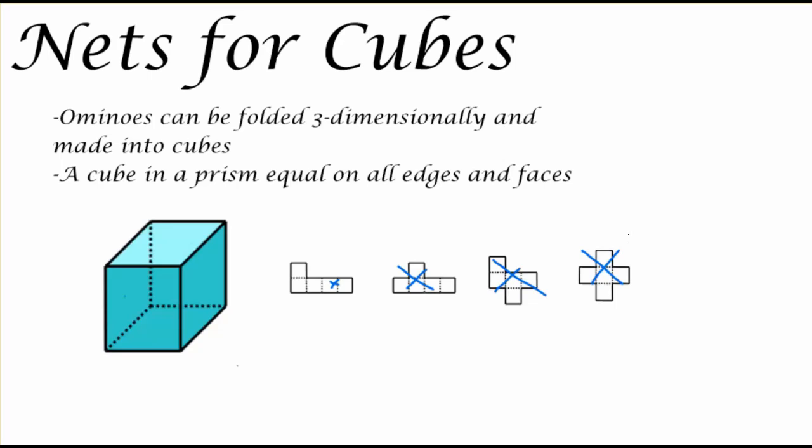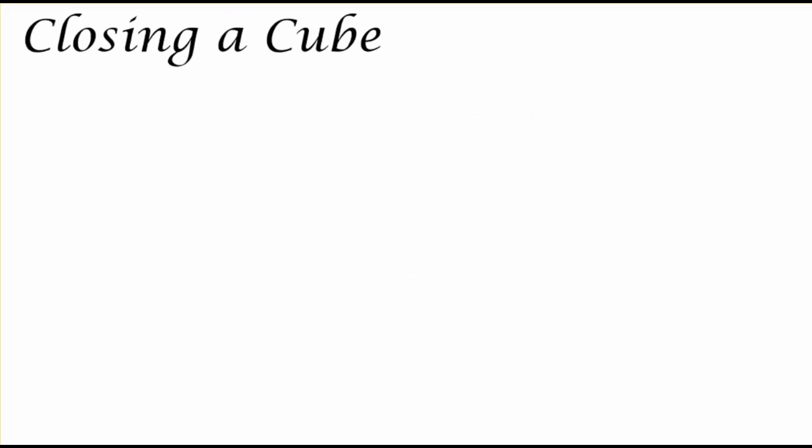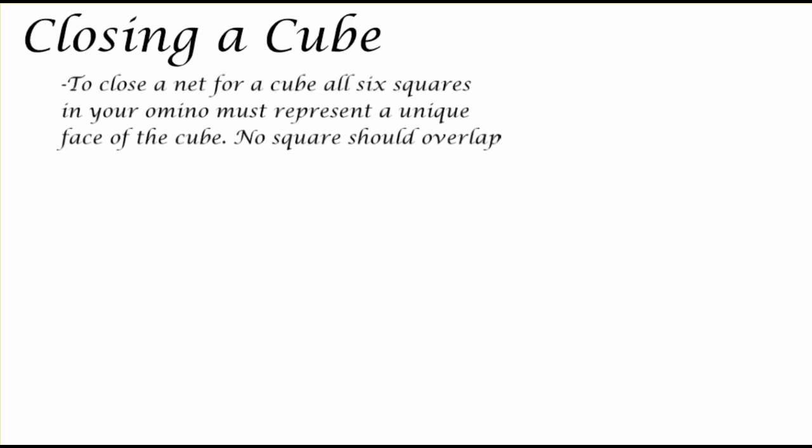But the way that we arrange those six squares must be very important. To close a net for a cube, all six squares in your ominous must represent a unique face of the cube. No squares should overlap and no sides should remain open.